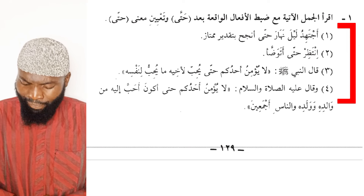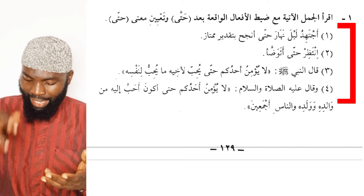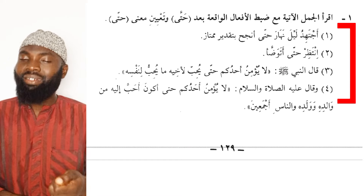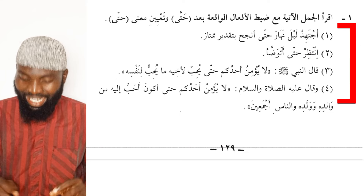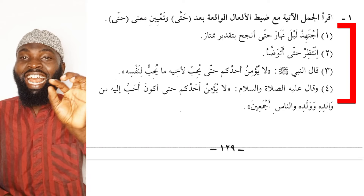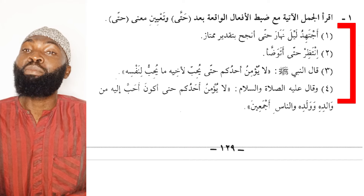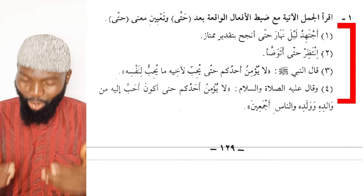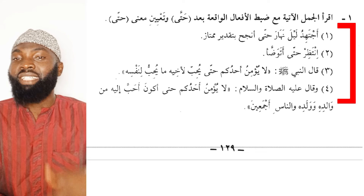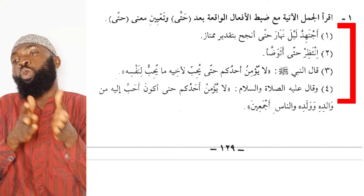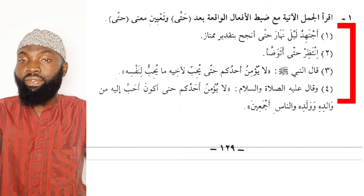Sentence one: ajitahidu layla wa nahara — I struggle, I am hardworking, night and day — hatta anjaha bitaqdirim mumtaz — in order for me to pass with excellent grades. The word anjaha is the verb and it carries fatha. Hatta here means La Mutalil — in order. The reason I work night and day is to become successful in my exams.